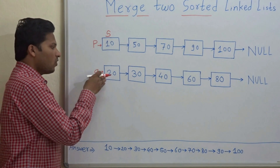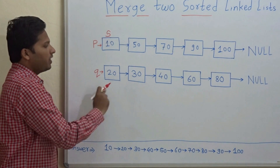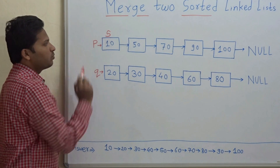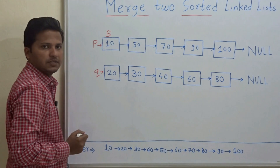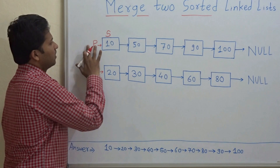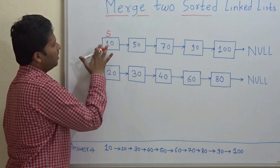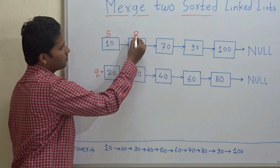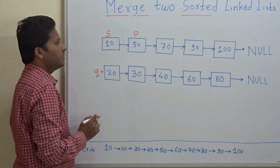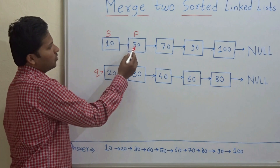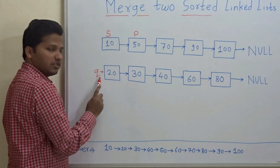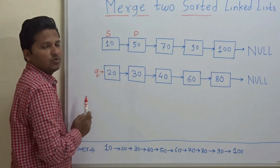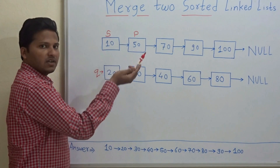If Q was less than P then S would have pointed to Q. But now as P is pointing to the first node in the first linked list, the next step is P will always point to the next node of S. So P is pointing to the next node of S now, and here the comparison begins. We have to compare P with Q and whatever is less, S will point to that node, and our new linked list will form.